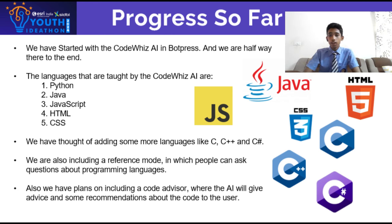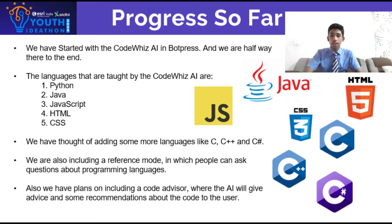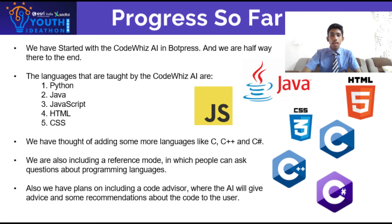Our progress so far: we have started building CodeViz AI in WordPress and we are halfway to the end. The languages taught by CodeViz AI are Java, Python, JavaScript, HTML, and CSS. We have also thought of adding more languages such as C, C++, and C Sharp.